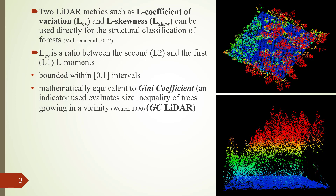LCV is mathematically equivalent to the Gini coefficient, and the Gini coefficient is an indicator that evaluates inequality among trees growing in a forest.